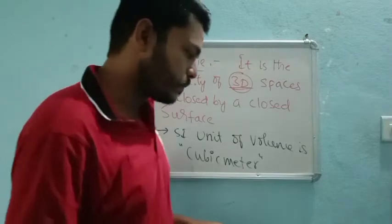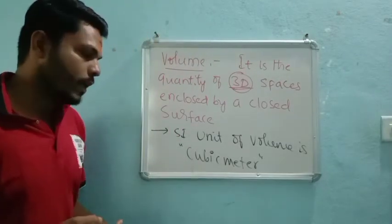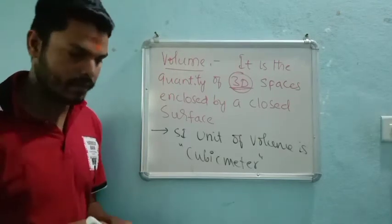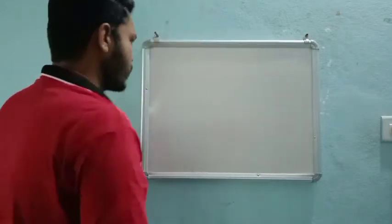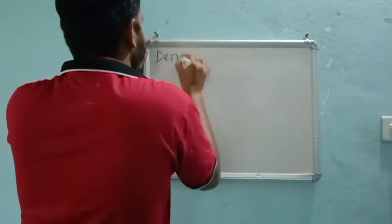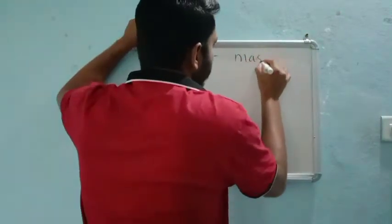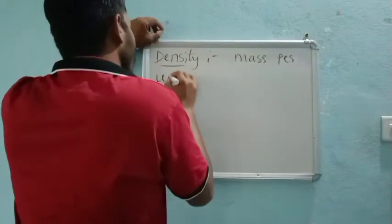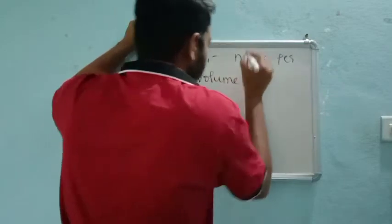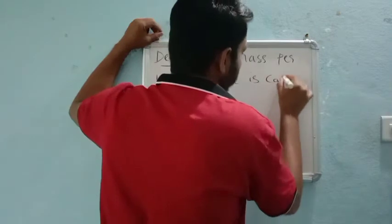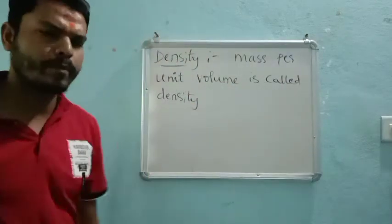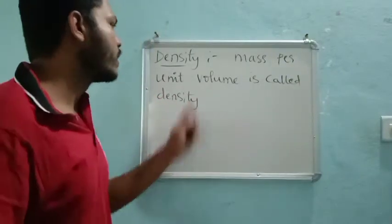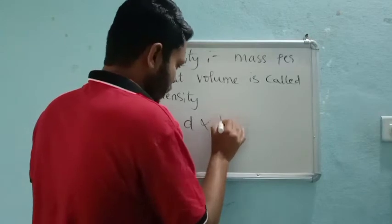The SI unit of volume is cubic meter. Next is density. Mass per unit volume is called density. Density equals mass divided by volume.